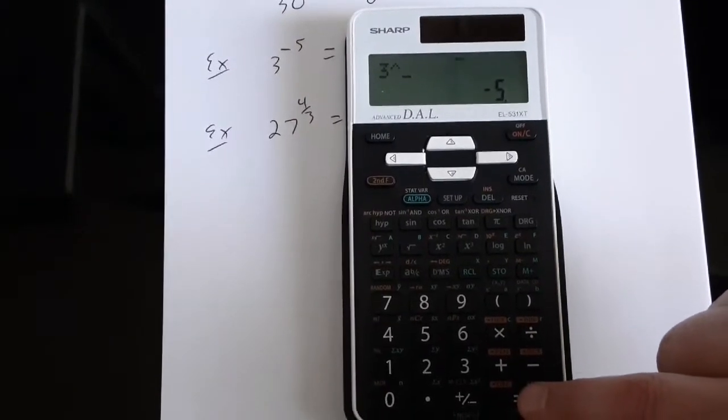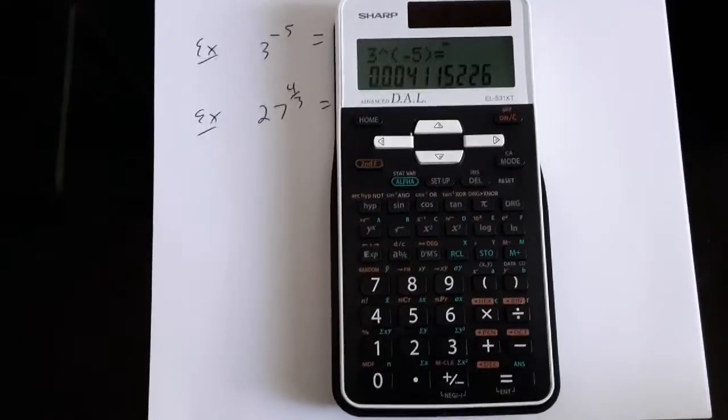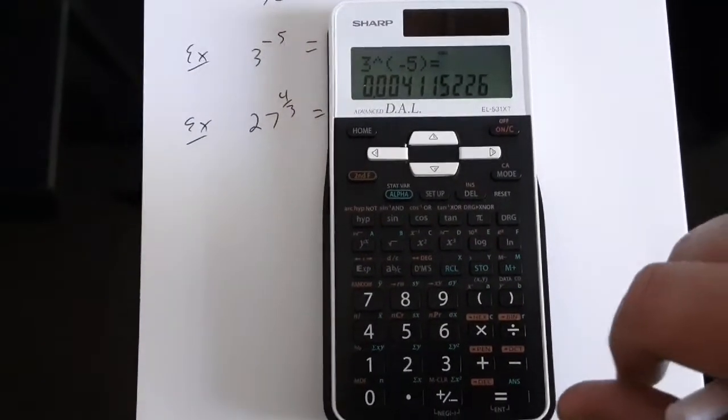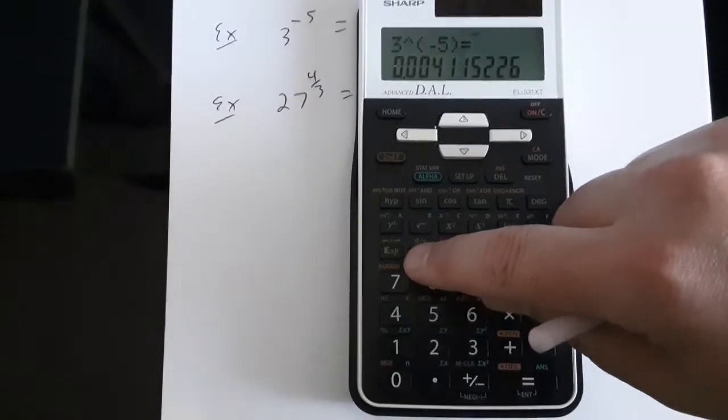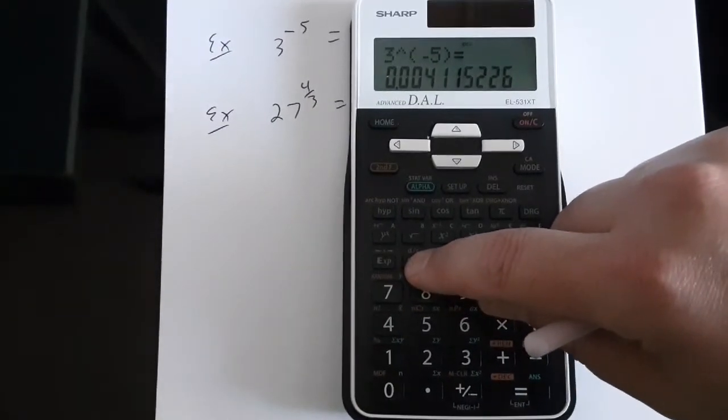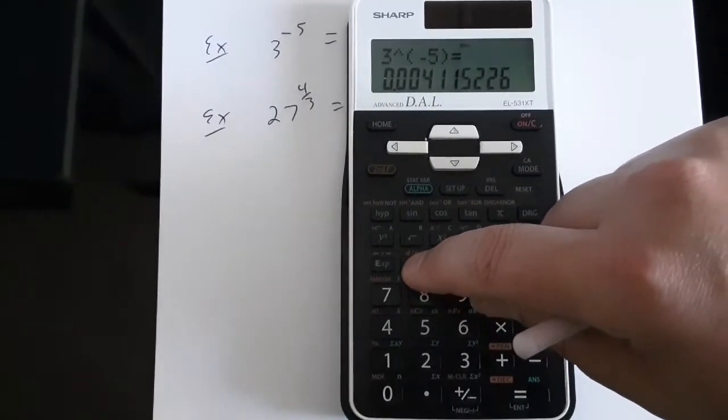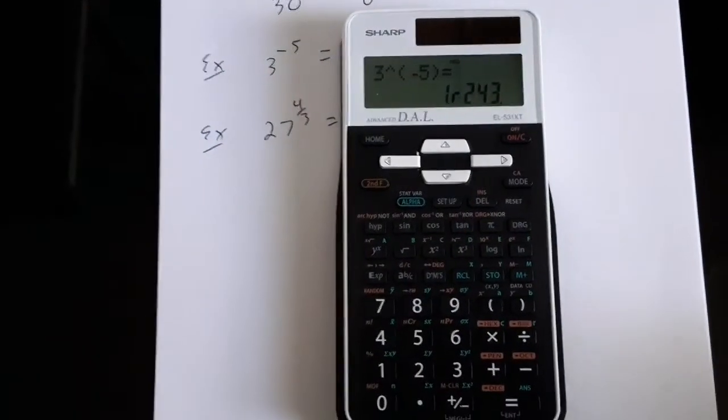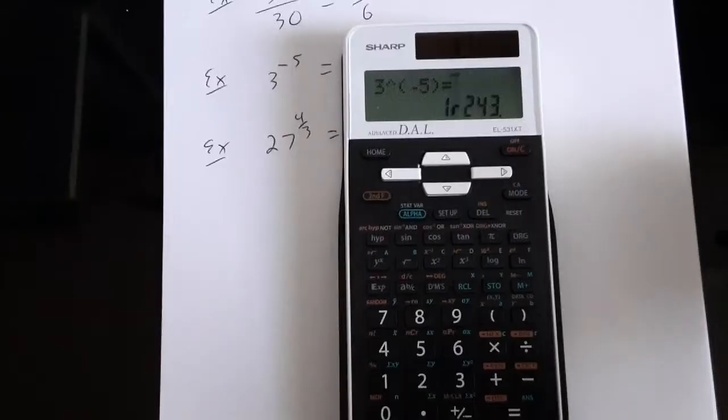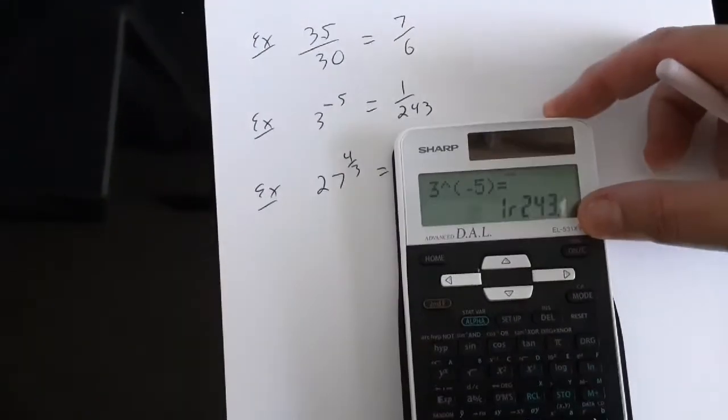If I hit equals, it gives me my answer as a decimal. And the nice thing is with this calculator is the fraction button can be used to turn decimals into fractions. So if it's possible for this to be turned into a fraction, then the calculator will try to do so. So touch the fraction button, and it says actually 3 to the negative 5 is 1 over 243.